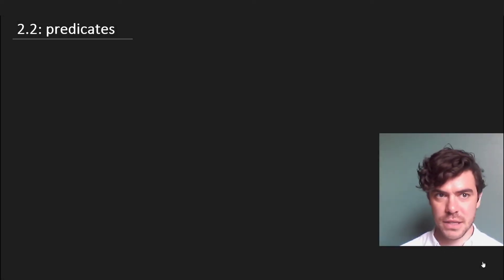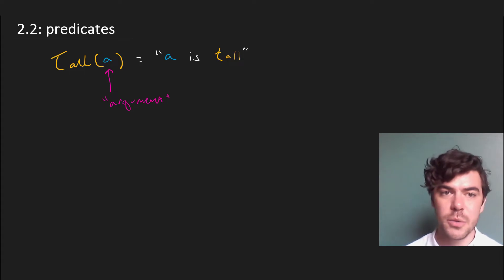Predicates are used to affirm something of something. For instance, we have a predicate like tall, which we write with a capital letter, and we can plunk in a constant, say A, and this just tells us that A is tall. The special term for this item here that goes into the empty space of a predicate is argument. This is a technical term, and it sometimes strikes people as kind of strange. It doesn't really have anything to do with arguing or presenting an argument, but that's the term that is traditionally used for this.